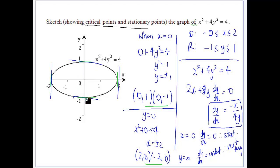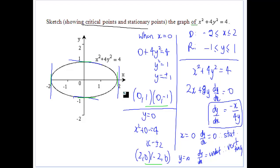We can sketch the ellipse using implicit differentiation by establishing where values exist, where critical points are, and what the gradient does. When x and y are both positive, dy/dx is negative, so the gradient is falling. When x is positive and y is negative, the gradient is positive, so it rises. When x is negative and y is positive, it's positive, making it rise. When both are negative, the negative out front means it's falling.